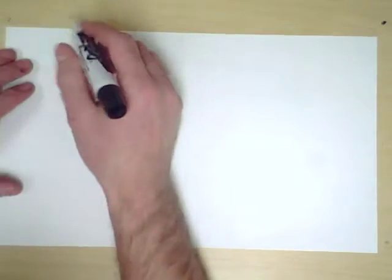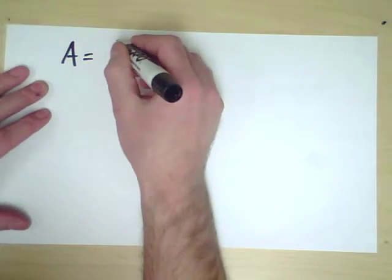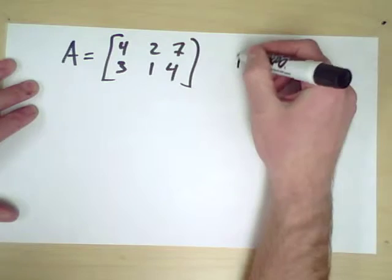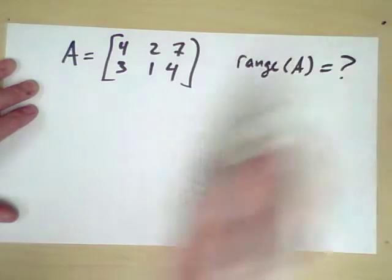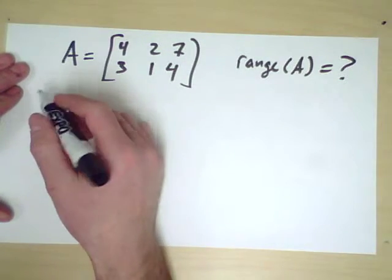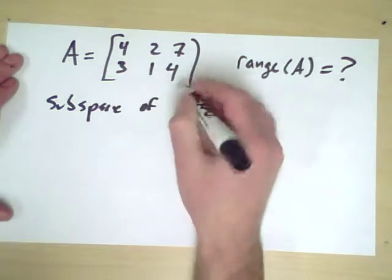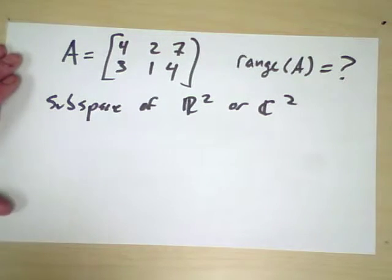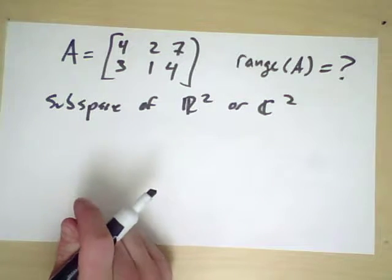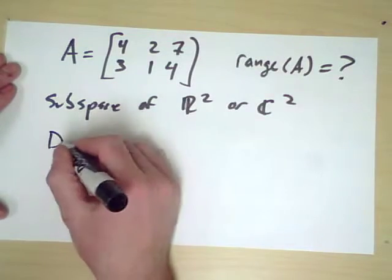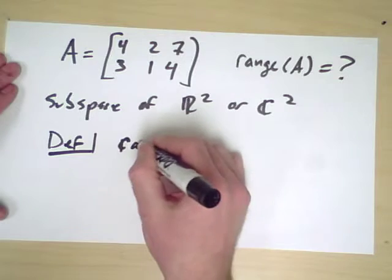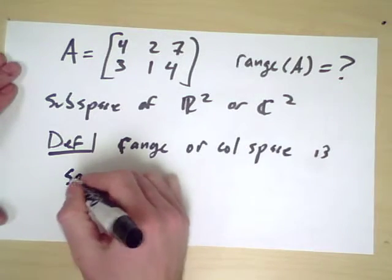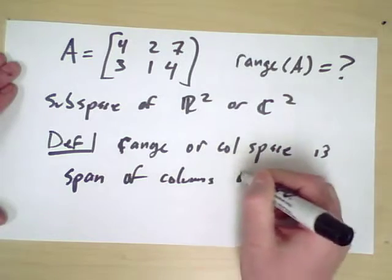For example, in the previous 2 by 3 matrix, we might ask what is the range of the matrix A? Well, it's clearly a subspace of R^2, or if we're working over the complex numbers over C^2, because the output is a 2 vector, so it's some space in R^2. We know it's a subspace because it's the span of something, it's the span of the columns of A. So by definition, the range or the column space is the span of the columns of A.